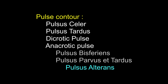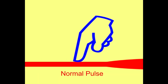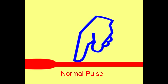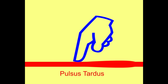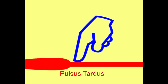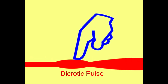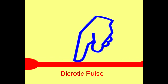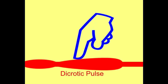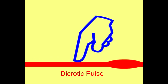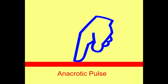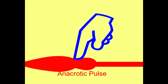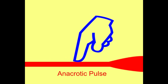The normal pulse wave consists of a rise or upstroke, a peak, and a fall or downstroke. A quick rise and quick fall is a bounding pulse or pulsus celer. A slow rise and slow fall typical of aortic stenosis is called pulsus tardus. The downstroke has a small dicrotic wave, not normally felt; if palpable it is termed dicrotic pulse, seen in typhoid fever and hypotension. An anacrotic pulse has a small wave felt on the upstroke, as seen in aortic stenosis.